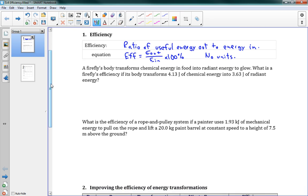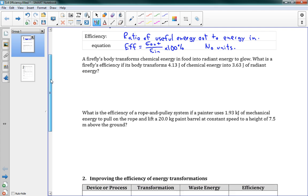It's fairly easy to work with, so we're going to see a few problems here. The first one is about a firefly. It says a firefly's body transforms chemical energy in food into radiant energy to glow. What is a firefly's efficiency if its body transforms 4.13 joules of chemical energy into 3.63 joules of radiant energy? Our efficiency is equal to the energy out over energy in times 100 percent. So our output energy was 3.63 joules. Our input was 4.13. We multiply that by 100 percent and it gives us an efficiency of 88 percent. That's how it works.